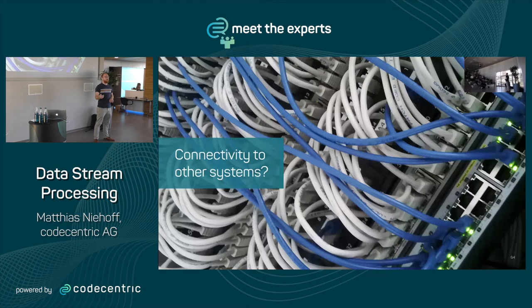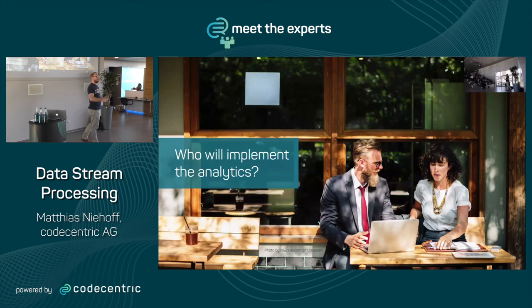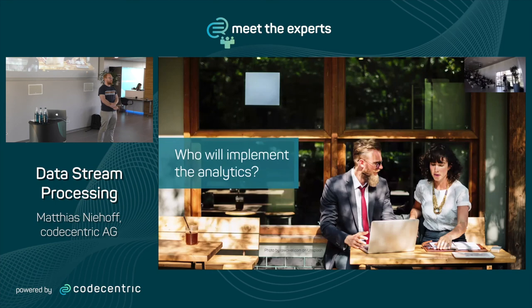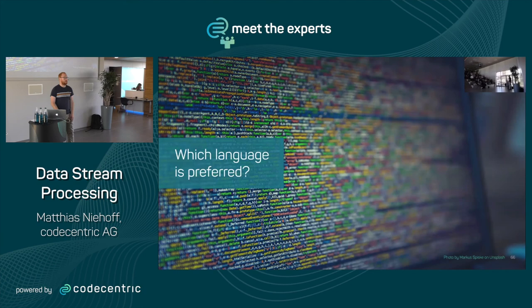Think about what systems you need to connect and write to. Do you need complete flexibility? If you're in the cloud and only writing to S3, Firehose might work. Otherwise, consider Lambda. With Spark, Flink, or Kafka Streams, you're flexible about where you write. Who will actually implement the analytics — a programmer fluent in Java or Python, or business people who know SQL? SQL streaming is promising but I'm a bit skeptical for now. What language is preferred? SQL is easy but lower level; Java, Python, or Scala offer more power.